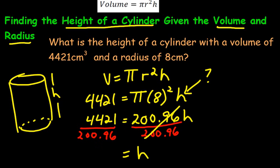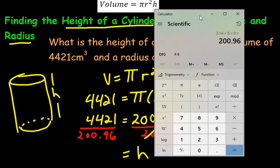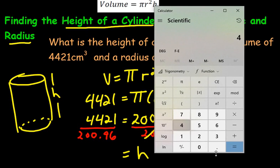But this part here, we definitely need a calculator to do that because I don't have time to do it the long way. 4421 divided by 200.96. Let's round it off to the nearest decimal. What that will do is it'll actually make this thing round off to 22. See all the 9s there, it's going to round off to 22.